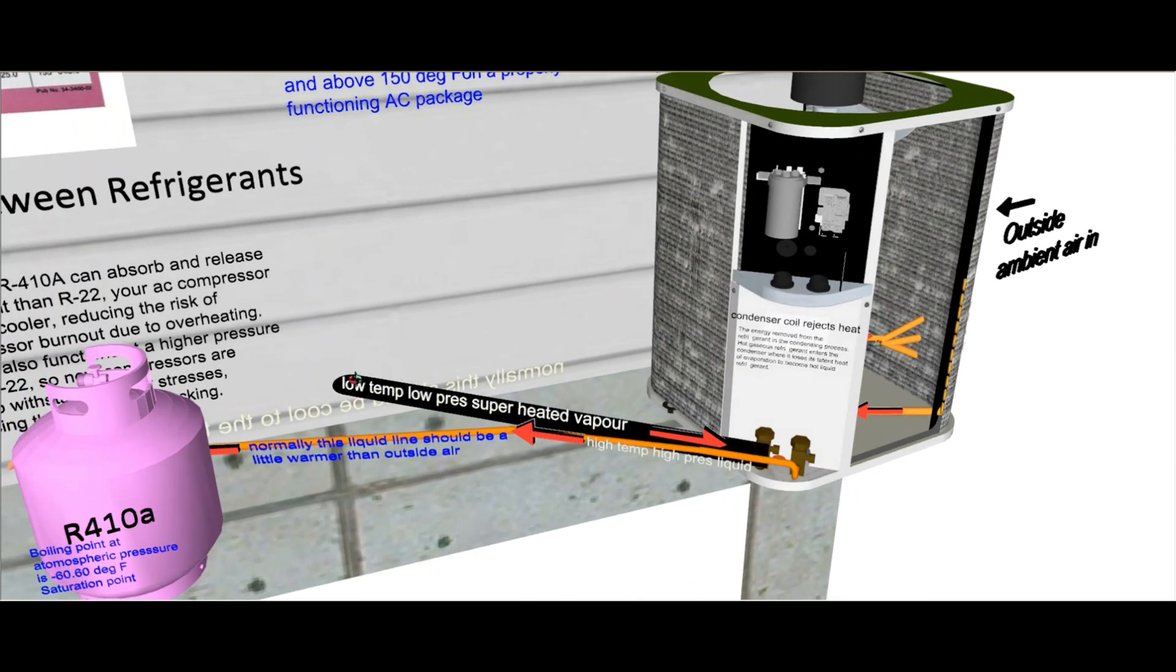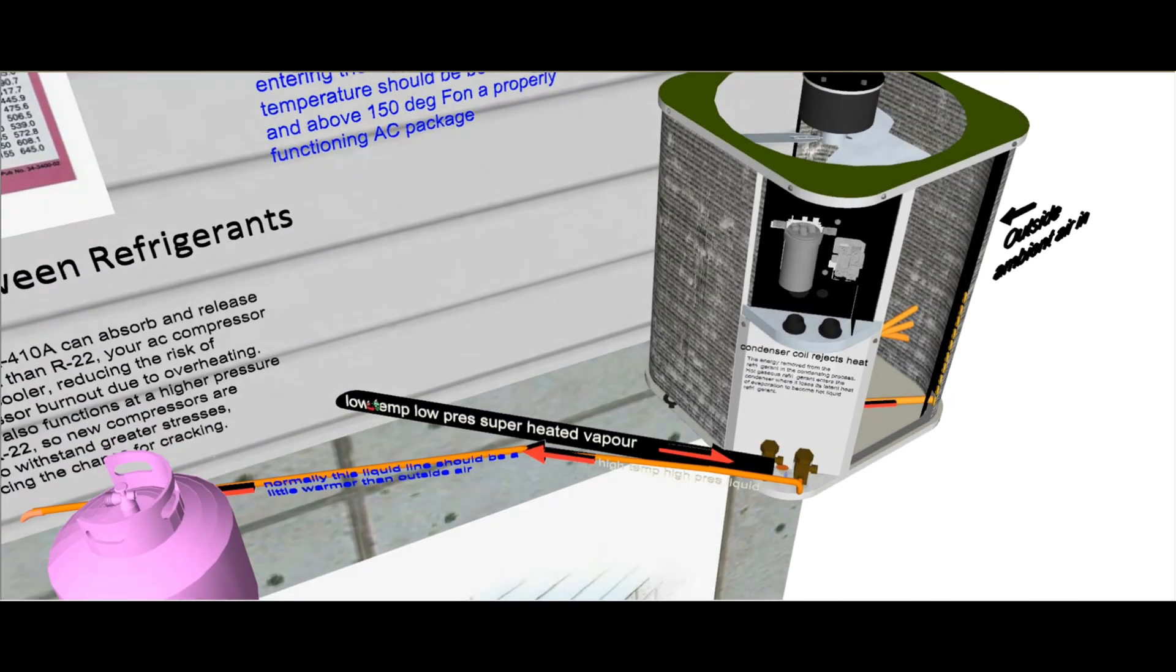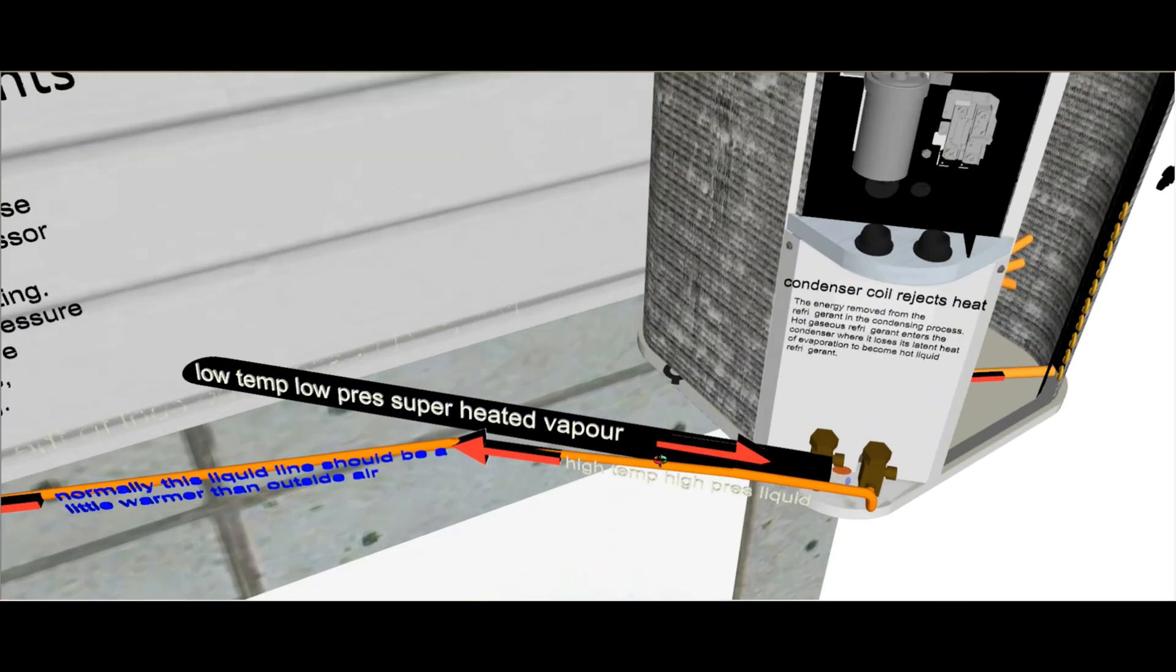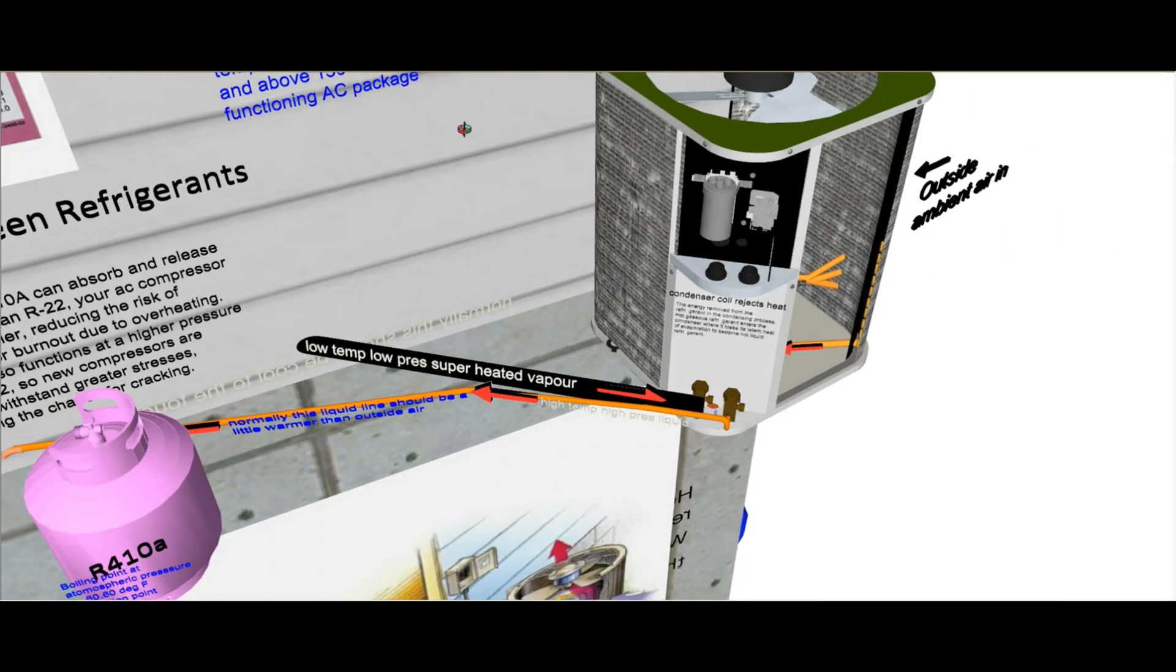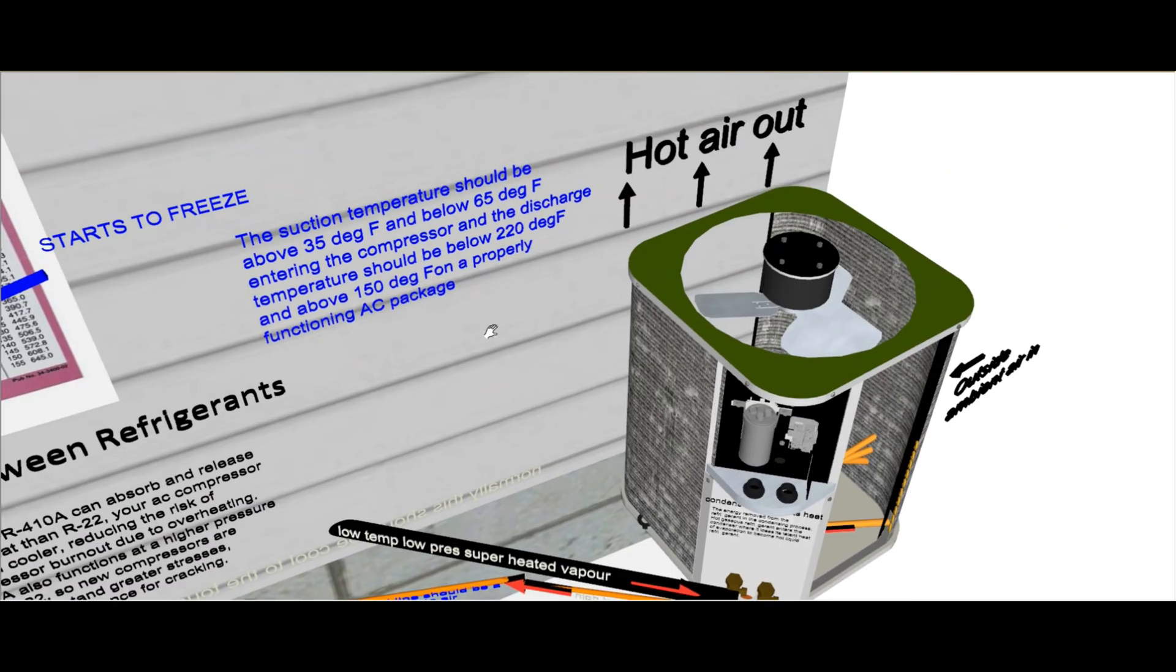We have two lines going into it from the house from the evaporator coil in the furnace. One has like black insulation over it. It's called the low temp, low pressure superheated vapor. So let's figure out what that means. Through studying up, I'm gonna throw out hypothetical numbers that are cool for a normal use in the summer if it was 80 degrees out. So you see here that's also called the suction line, not just the vapor line. This is getting sucked back to the compressor which is inside the condenser.